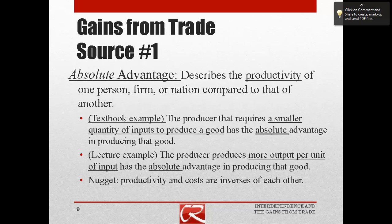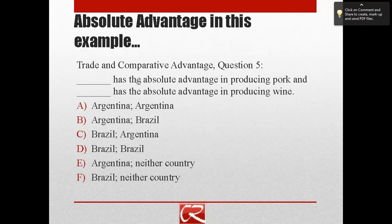Sometimes there are gains from trade simply because different countries have different strengths. There's a reason why redwood trees are grown on the north coast, and there's a reason why oil is pumped out of Saudi Arabia — the two regions trade with each other because it would be really hard to raise redwood trees in Saudi Arabia, and there isn't much oil on the north coast. For the application here: which country has the absolute advantage in producing pork, if either? And which country has the absolute advantage in producing wine, if either?